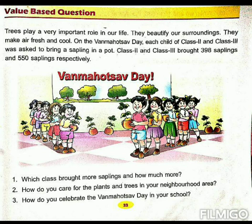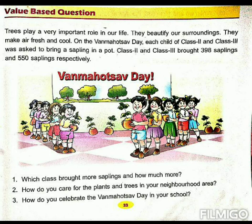Write down your answer in front of this question in your book. Now let's read question number 2: how do you care for the plants and trees in your neighborhood area? You can give them water, don't pluck them, grow more trees, plant more saplings — this is how you can take care of them. Discuss with your parents and write down your answer in the book.